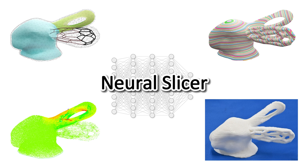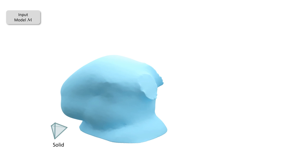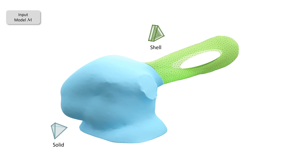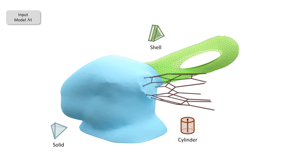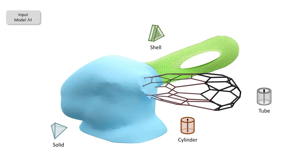Our neural slicer can handle all these challenges. The input of our slicer can be a model in different discrete representations, including a solid model, a shell model, skeletons of struts, or skeleton for tubular solids. Our neural slicer is agnostic to all these different representations.